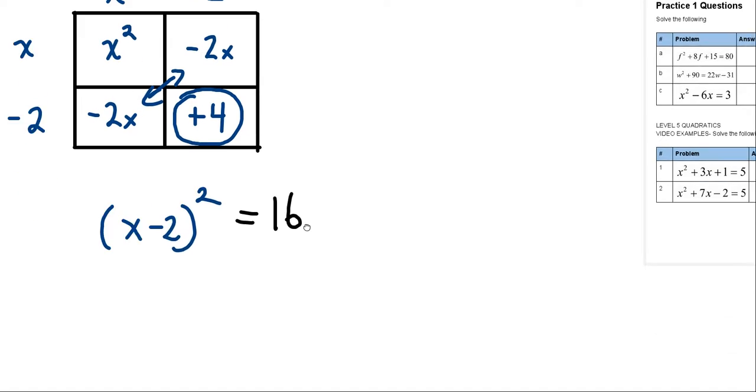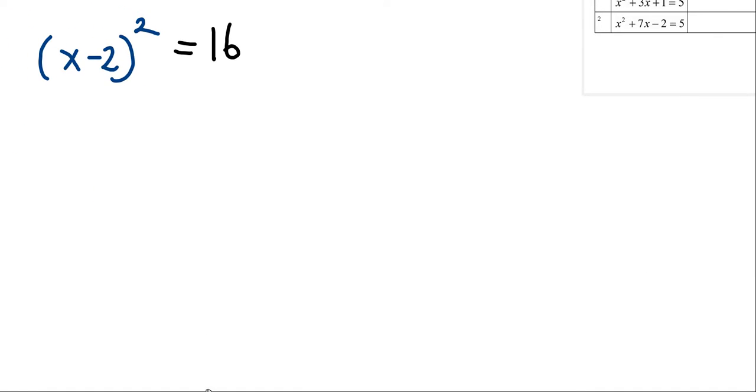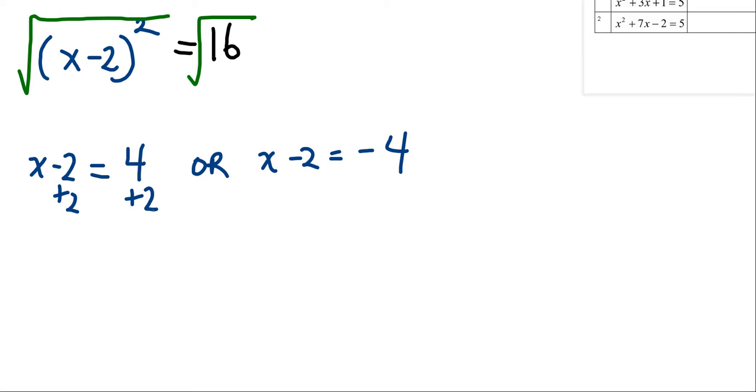It's now back to the previous stuff, like a level 2. So I can undo this with undoing the square root. Square root both sides. So we get x minus 2 equals 4, or x minus 2 equals negative 4. Seems to work. Add 2. Add 2. Add 2. X equals 6 is a possibility.